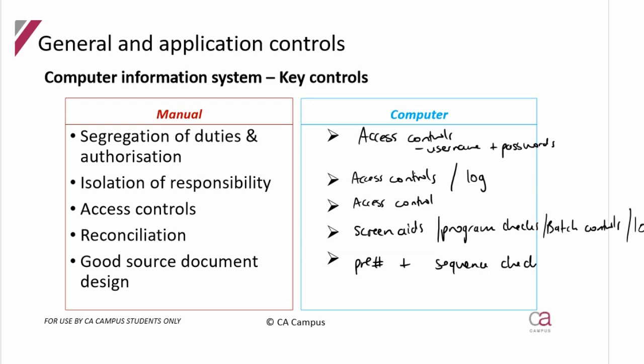Now, moving on from application controls, I want to look at the different types of infrastructure that a company can use for their computers. Previously this was referred to as 'advanced computer information systems,' so I've kept that heading for consistency with prior studies, but in the current standard it's referred to as infrastructure. These are the different types of infrastructure that a company or client can use as their computer information system.